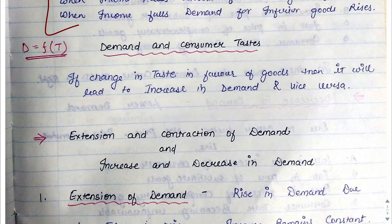Next is demand and consumer taste. Consumer taste changes — sometimes Pepsi, sometimes Coke, sometimes Fanta. If the consumer has a preference for Pepsi, demand for Pepsi will increase; if preference shifts to Fanta, demand for Fanta will increase.